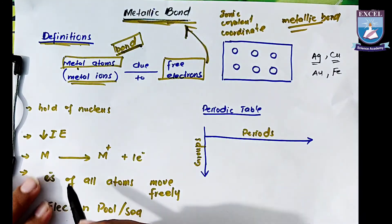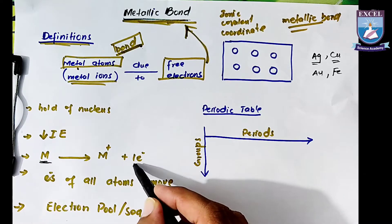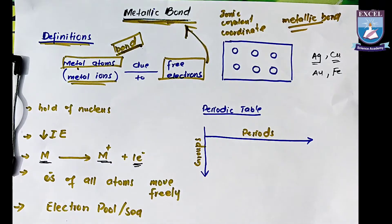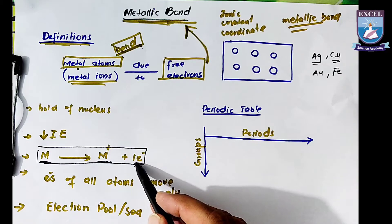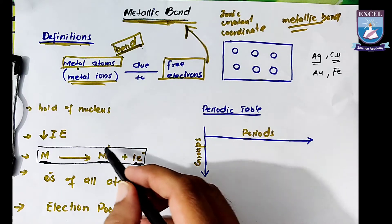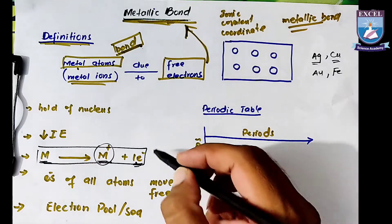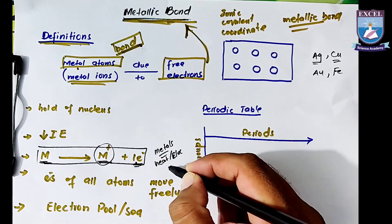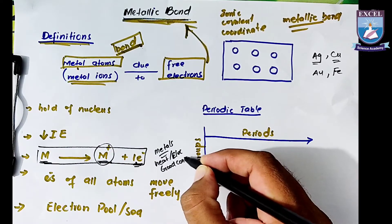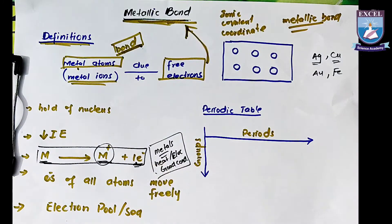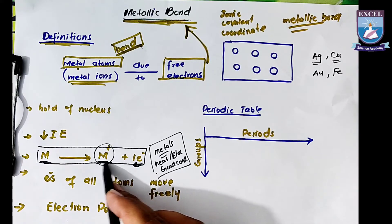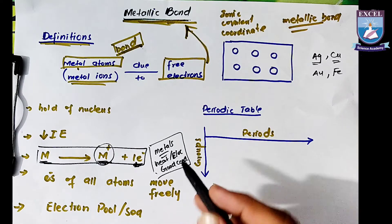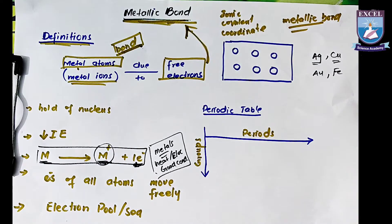What are metals? Metals are the elements — the substances — which can lose electrons so easily and can form positive ions. They are called metals. And metals are good conductors of heat and electricity. Metals are the substances which can lose electrons so easily and can form positive ions, and they are good conductors of heat and electricity.